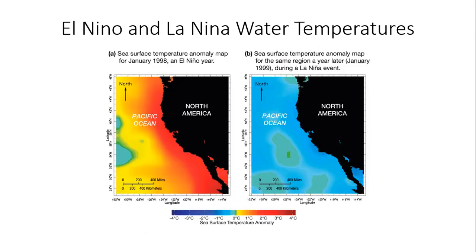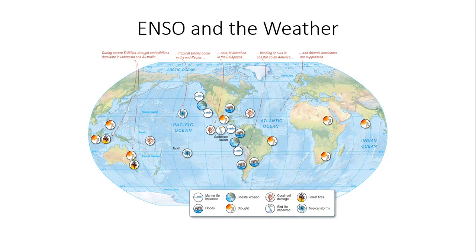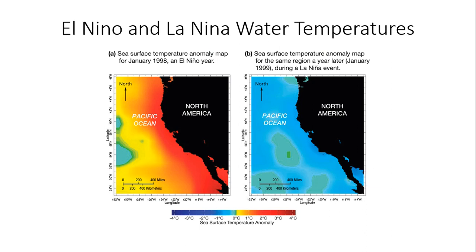Here's a look at the comparison between El Niño and La Niña temperatures, showing the major differences in temperature anomalies. The graphic on the left is January 1998 — one of those significant El Niño years — and the graphic on the right shows January 1999, the La Niña event, with much cooler than normal water along the Eastern Pacific.